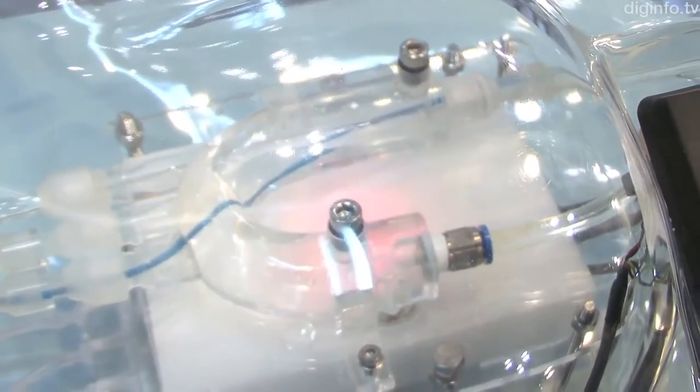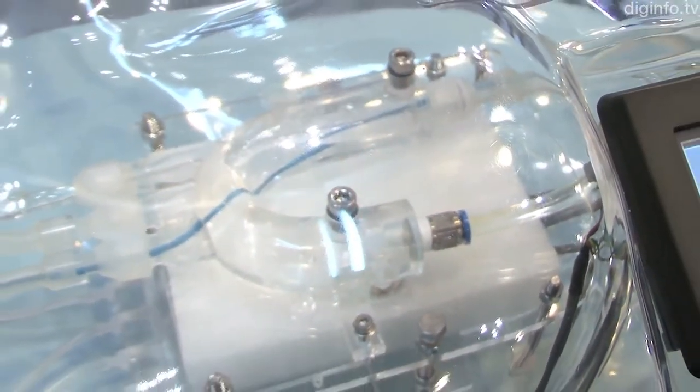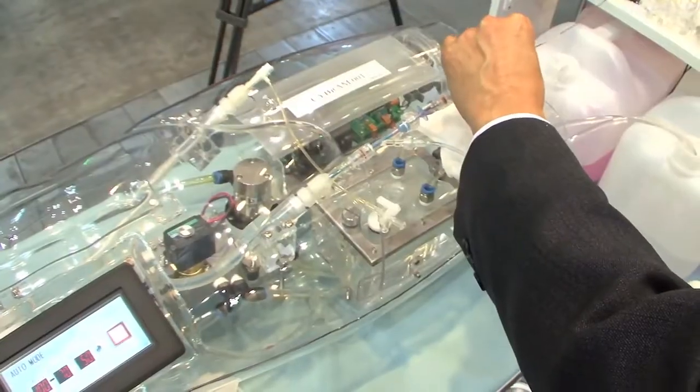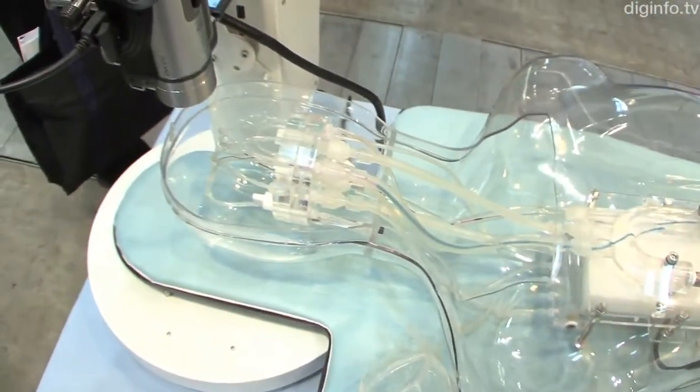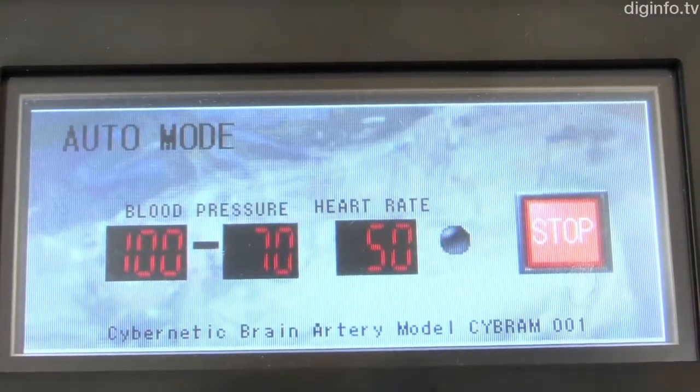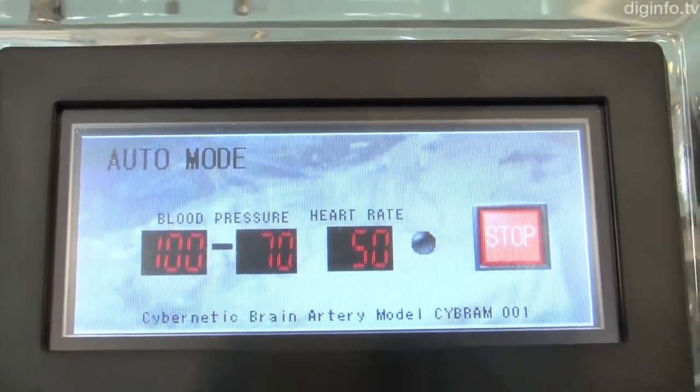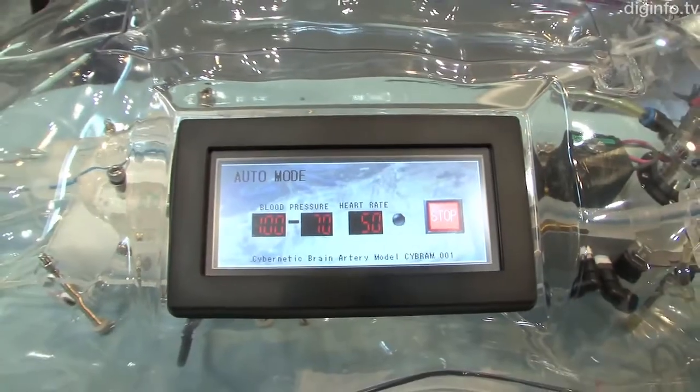The small pump unit embedded in the body is automatically controlled based on information transmitted from the blood pressure sensor, and the blood pressure and heart rate can be set through the touch panel. The maximum and minimum blood pressures and heart rate are constantly displayed in real time during operations.